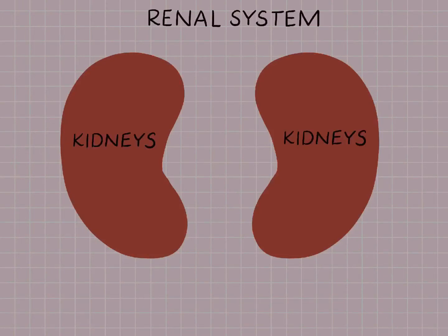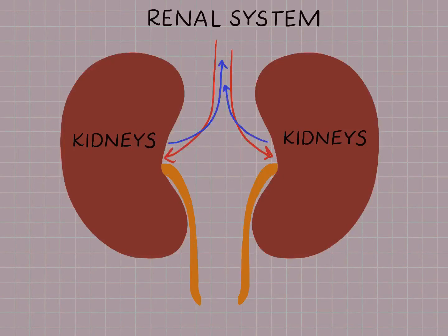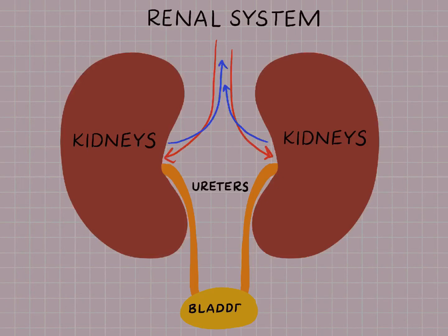The renal system is made up of the kidneys and the veins and arteries that feed blood flow to and from the kidneys. Once the kidneys produce urine, it needs to be excreted from the body — first carried by the ureters, then stored in the bladder, and ultimately excreted out of the urethra.